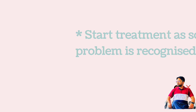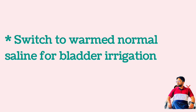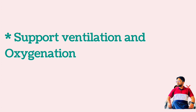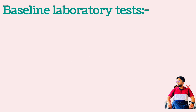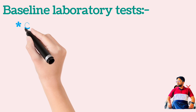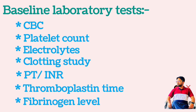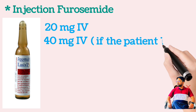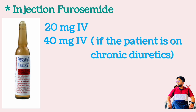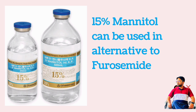Treatment of TURP syndrome should begin the moment the problem is recognized. Terminate the surgery as quickly as possible. Switch to normal saline for continuous bladder irrigation, which must be warm to prevent hypothermia. Support ventilation and oxygenation. Administer IV normal saline and diuretics as needed. Follow baseline laboratory tests including CBC, platelet count, electrolytes, clotting studies, PT/INR, thromboplastin time, and fibrinogen level. Inject furosemide 20 mg IV; if the patient is on chronic diuretics, a dose of ≥40 mg may be needed, but dosing should be based on the diuresis obtained from the 20 mg dose. 15% mannitol can also be used as an alternative to furosemide.